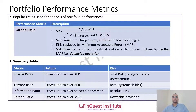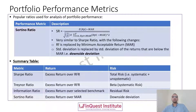In the Sortino ratio, the numerator is the expected portfolio return minus the minimum acceptable return demanded by the investor. In the denominator, we measure risk as the standard deviation of returns that fall below the minimum acceptable return — this is what we call downside risk or downside deviation.